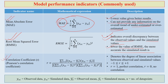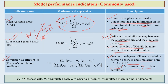The correlation coefficient, or Pearson correlation coefficient (r), is the most popular indicator for testing model performance. It denotes the degree of linear association between observed and simulated values. A higher r value indicates a better result, with r equal to 1 representing perfect correlation and r equal to 0 representing no correlation.